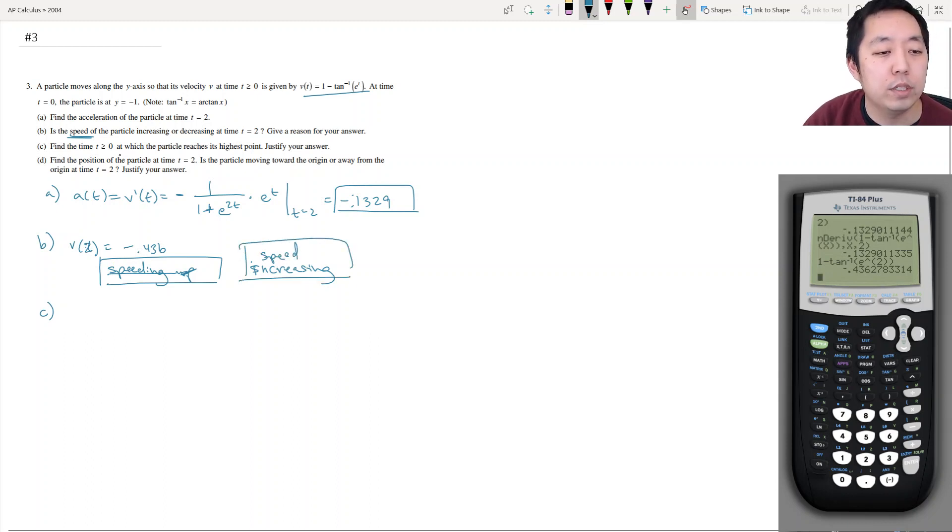Find time t greater than or equal to 0 at which the particle reaches its highest point. Justify your answer. Okay, the highest point, there's a couple ways to think of it, is when the velocity is 0. That's a critical number. Well, because its maximum height is when x of t is max. If I want to find a max here, I want to look at critical numbers, which is x prime of t is equal to 0. x prime is just v prime of t, so I want to know when v prime of t is equal to 0. Sorry, x prime of t is just equal to v of t, so I want to know when v of t is equal to 0.